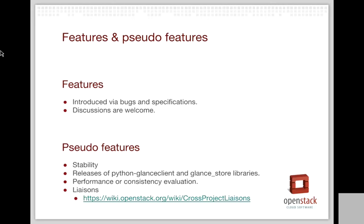Another aspect of the project is pseudo-features, where we focus on stability. We also focus on releases of the different libraries. Currently, we have the Python Client as well as the Glance Store libraries within the program. It is also a way of thinking for enhancing or improving performance or consistency issues. If you have any suggestions or concerns, please feel free to reach out to the liaisons of the respective aspects of pseudo-features.